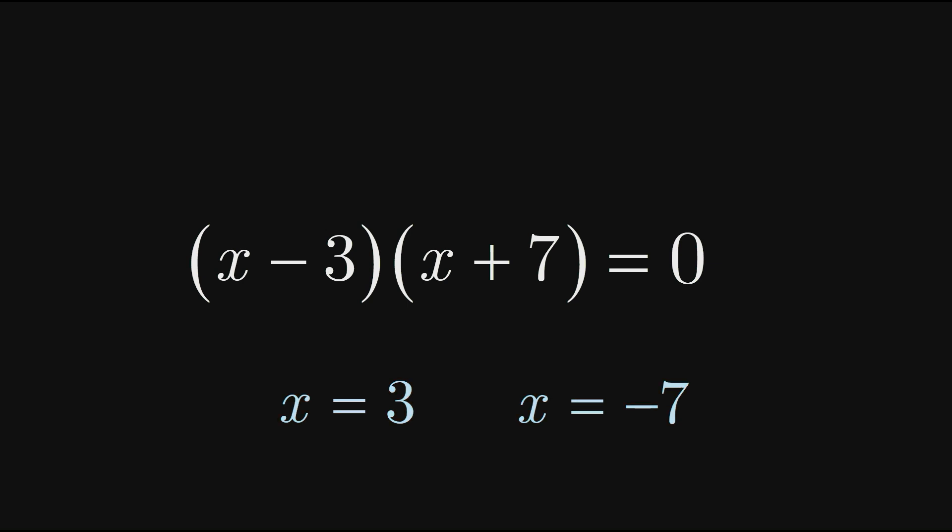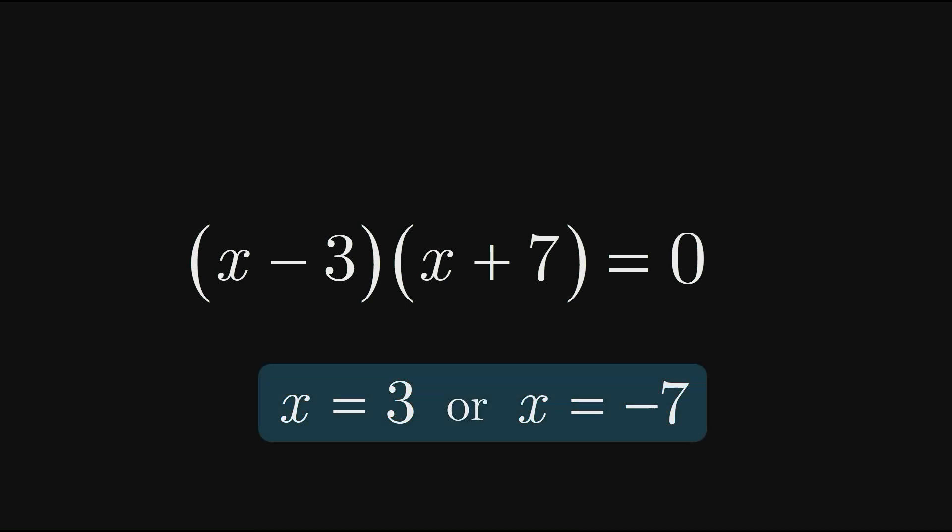Therefore, either an x value of 3 or an x value of negative 7 would make the entire factored expression, and thus the original expression, work out to zero. Notice how using the factored version of the expression makes it much easier to solve the problem.